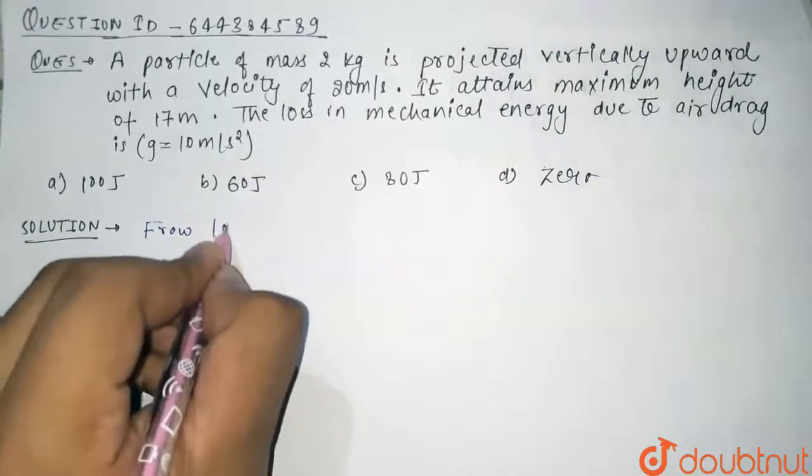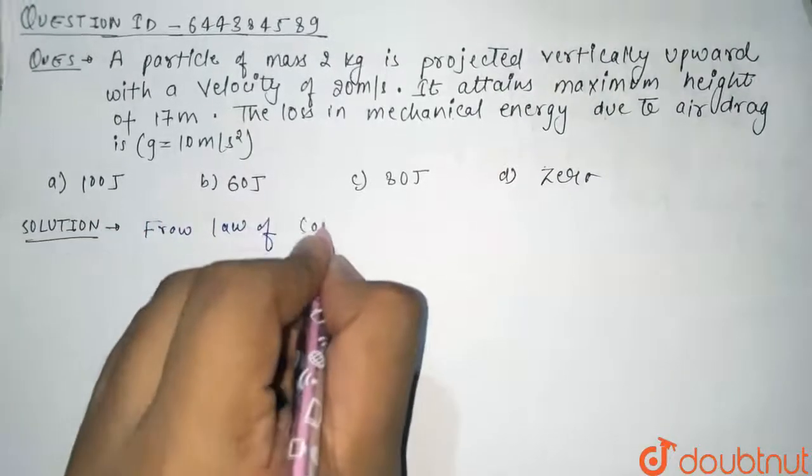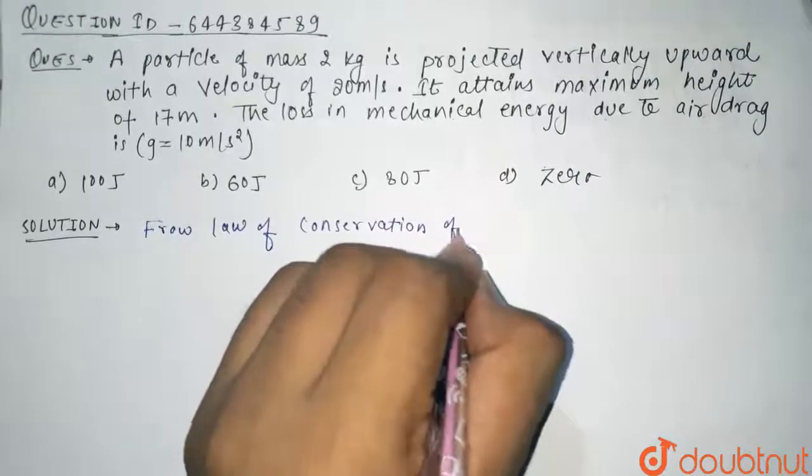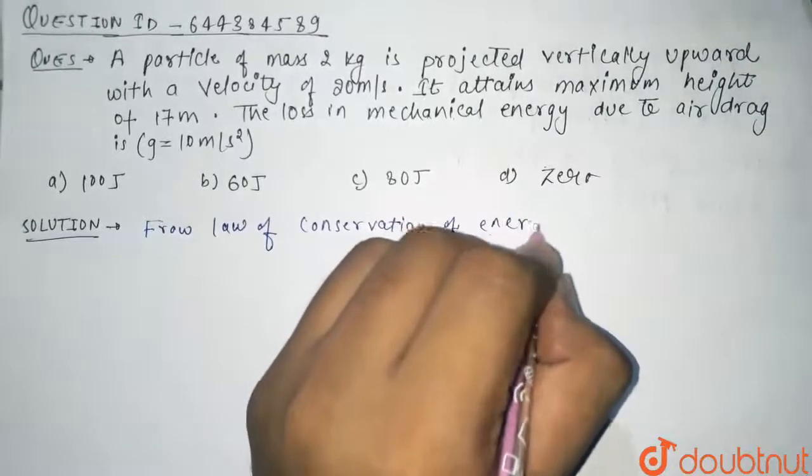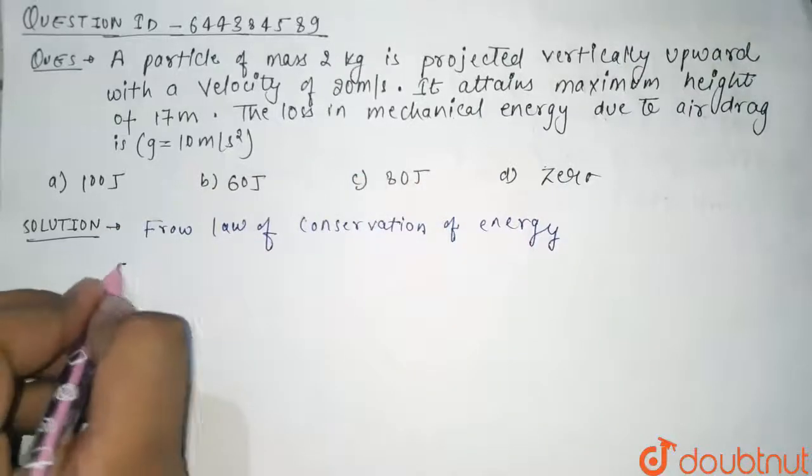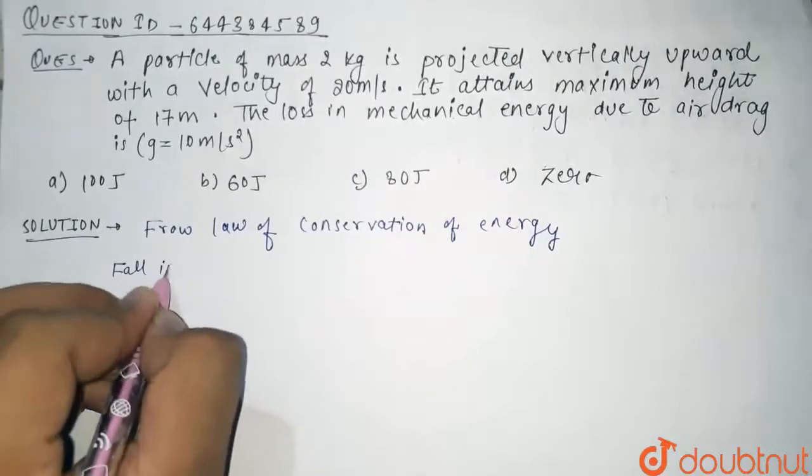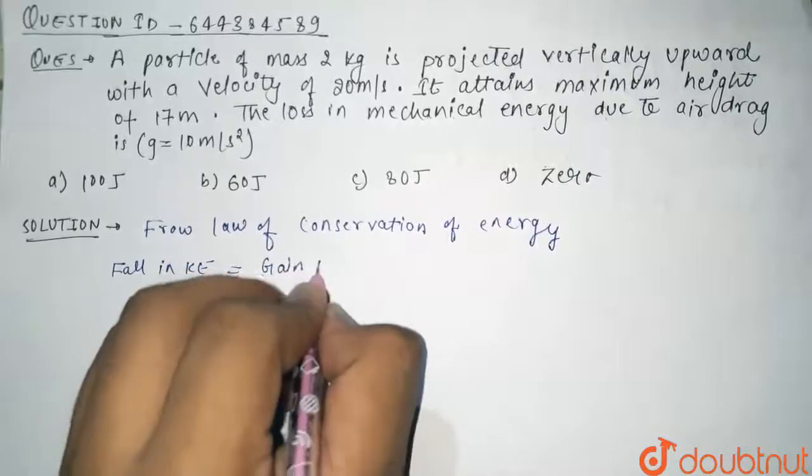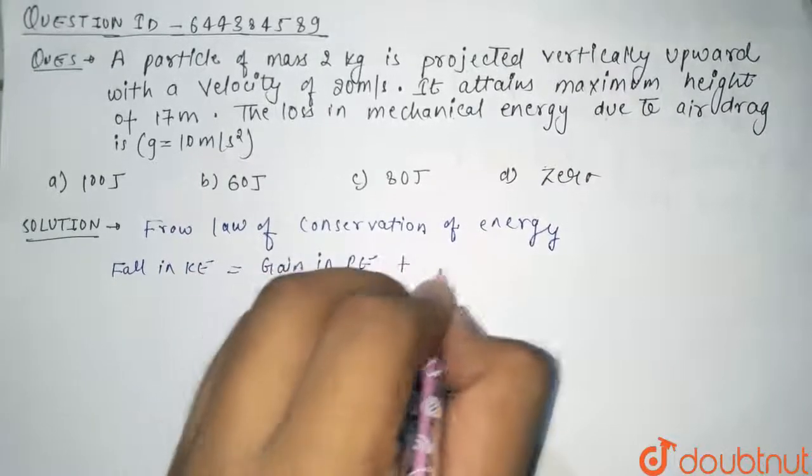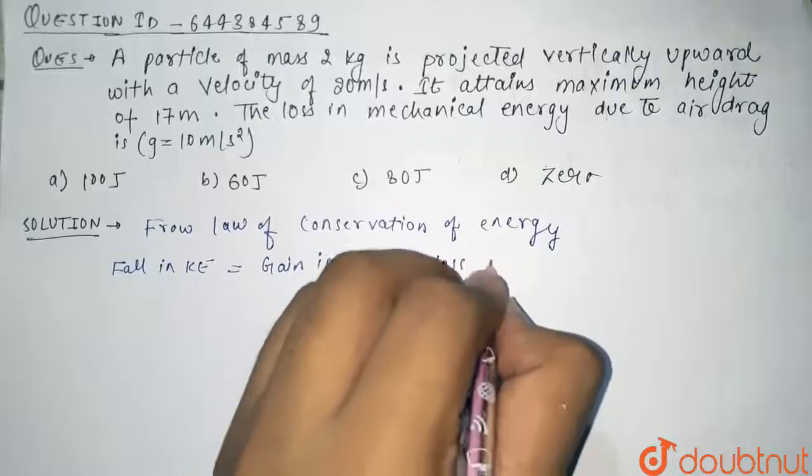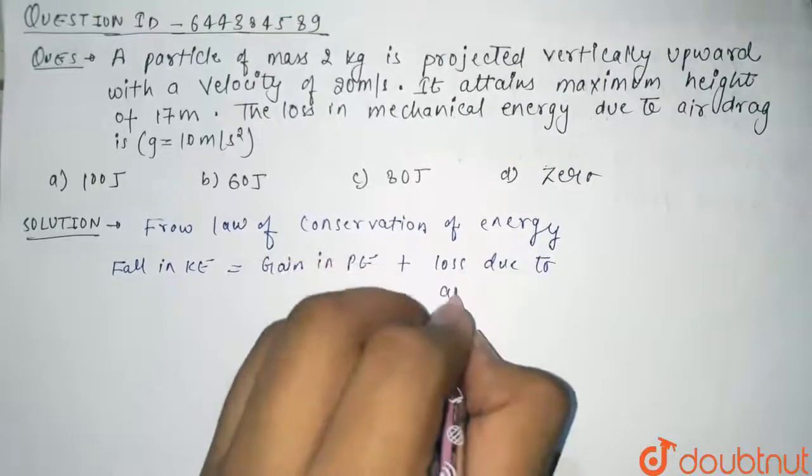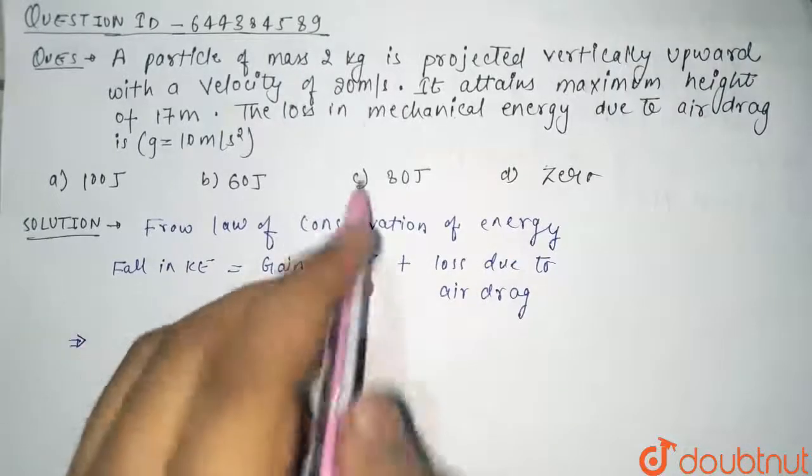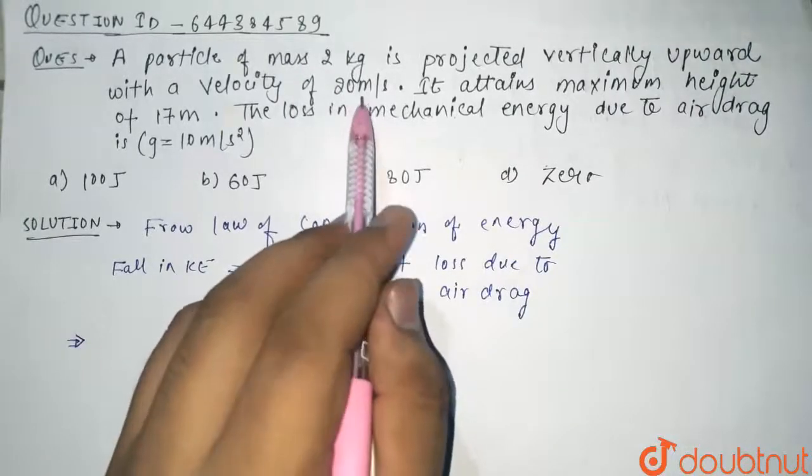Fall in kinetic energy will be equal to gain in potential energy plus loss due to air drag. So what will be the fall in kinetic energy? Since it was initially thrown with speed of 20 meters per second and finally it stops...